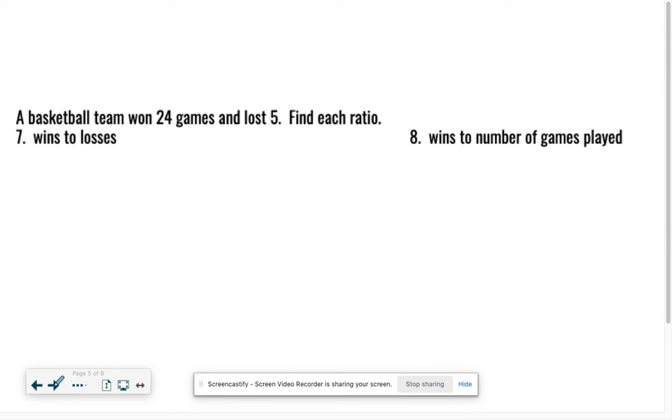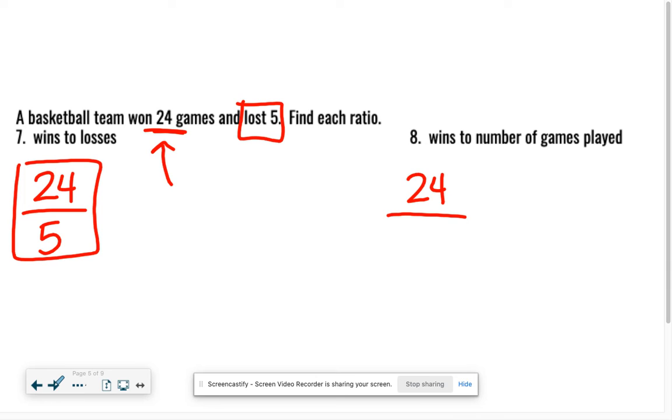A basketball team won 24 games and lost 5. Find each ratio. Number seven: wins to losses. Our team won 24, we lost 5. So 24 to 5. And I always check - can I reduce 24 and 5? No, there's nothing special about either of those that they have in common. Number eight: wins to the number of games played. We won 24 games. Total number of games played - if we won 24 and lost 5, how many total games did we play? Add them together: we played 29. Can we reduce 24 and 29? No, because of that 29. Can't do anything with it.